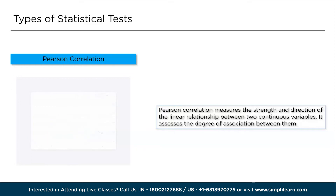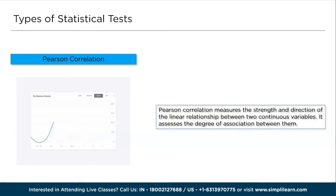It ranges from -1 to +1, where -1 represents a perfect negative correlation, +1 represents a perfect positive correlation, and 0 indicates no correlation.